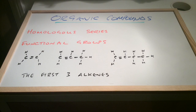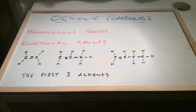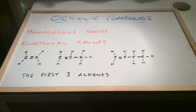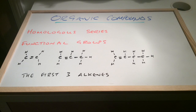In the case of alkenes, the carbon-carbon double bond is what gives it its characteristic reactions. The functional group is the part of the molecule that gives the molecule its characteristic reactions.